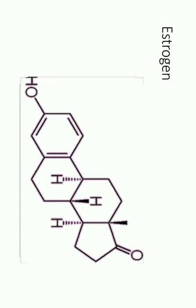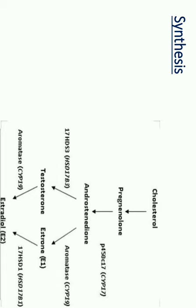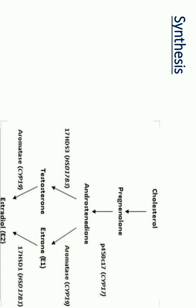There are three forms of estrogen: estradiol, estrone, and estriol. Regarding synthesis, it starts from cholesterol, which is converted to pregnenolone, and then to androstenedione. From androstenedione it is converted to testosterone, and by the action of aromatase enzyme it is converted to estradiol. It can also follow another pathway: from androstenedione to estrone and then to estradiol.